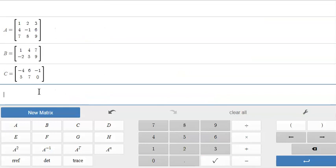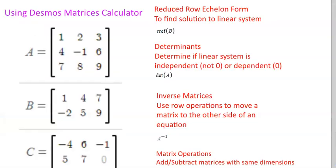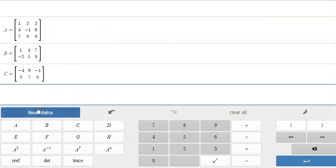After we've made our matrices we can find different things with this. First let's do the reduced row echelon form to find the solution to a linear system. Let's find the reduced row echelon form of matrix B. To do this we press the RREF button on here and then type B and then enter.